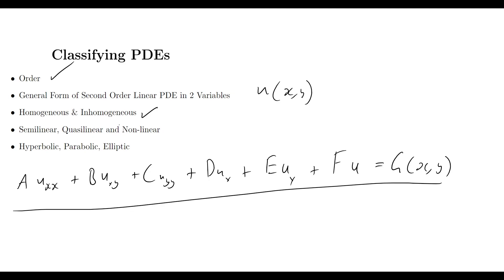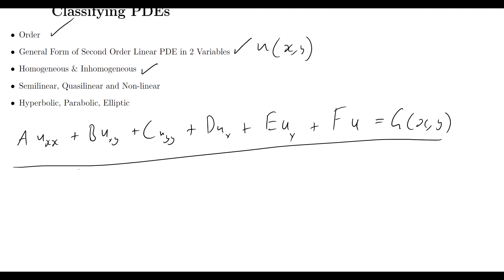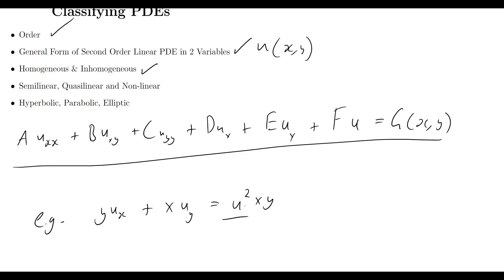Now let's look at semi-linear, quasi-linear, and non-linear PDEs. The general form we've seen so far represents linear PDEs. Semi-linear means the equation is linear in the highest order derivatives of the unknown function. For example: y·u_x + x·u_y = u²·x·y. The highest order terms — u_x and u_y — are linear, but the right hand side has u², which is non-linear, so this is a semi-linear PDE.